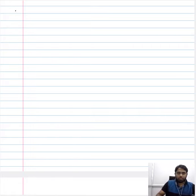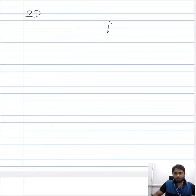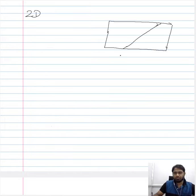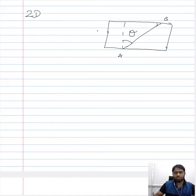We began by considering a two-dimensional setup. This was our initial consideration. We began by considering a two-dimensional system wherein the region of our interest was inclined, and we quantified this inclined region by dropping the perpendicular, quantifying the angle as theta. This two-dimensional system was under a uniaxial tensile load.